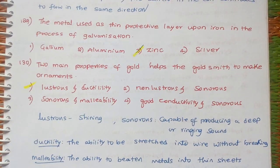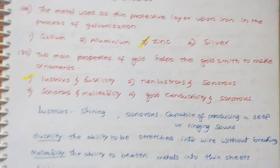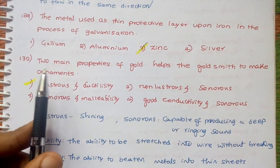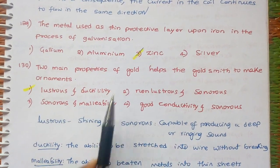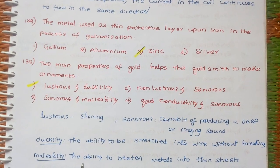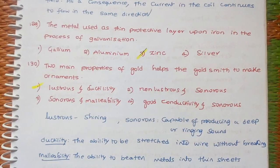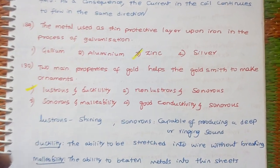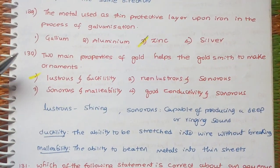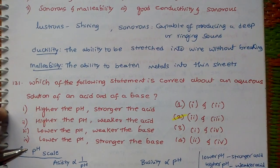We don't want sonorous or ringing sound. Ductility means the ability to be stretched into a wire without breaking. Of course for gold we have to make it in wire form. That's why it should be lustrous and ductile. Malleability we don't want. Malleability means the ability to be beaten into thin sheets.